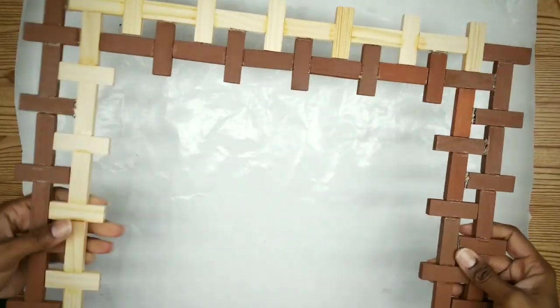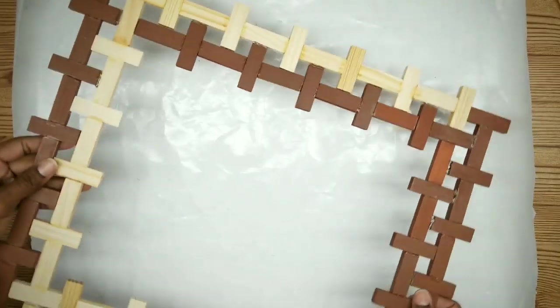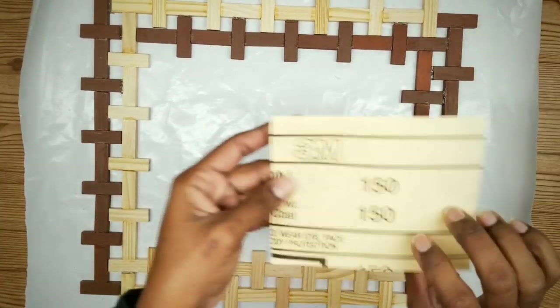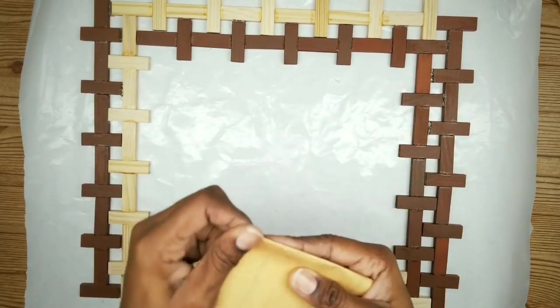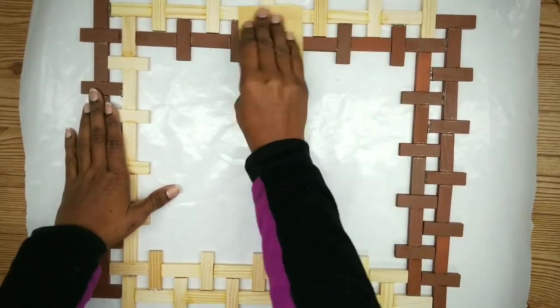And here is the frame completely dry and secured together. Before proceeding, we want to go ahead and lightly sand the blocks down to remove any imperfections or glue buildup from the assembly.